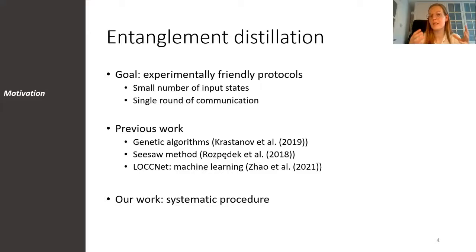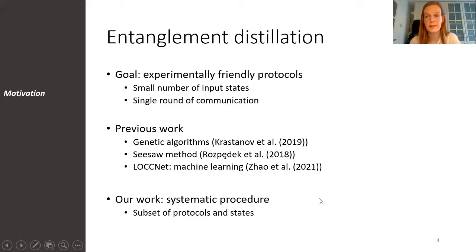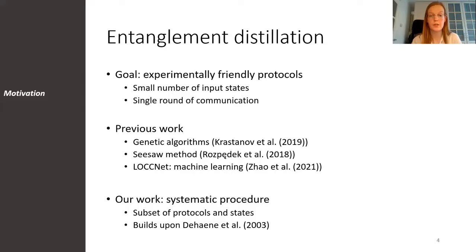Complementary to these previous works, we present a more systematic procedure to find good distillation protocols. To be able to do this, we restrict ourselves from the big space of all distillation protocols to a smaller but relevant subset of protocols and states. We build upon the work from Hane et al., consider the same protocols and states, and present a relatively good performing 4-to-1 protocol.